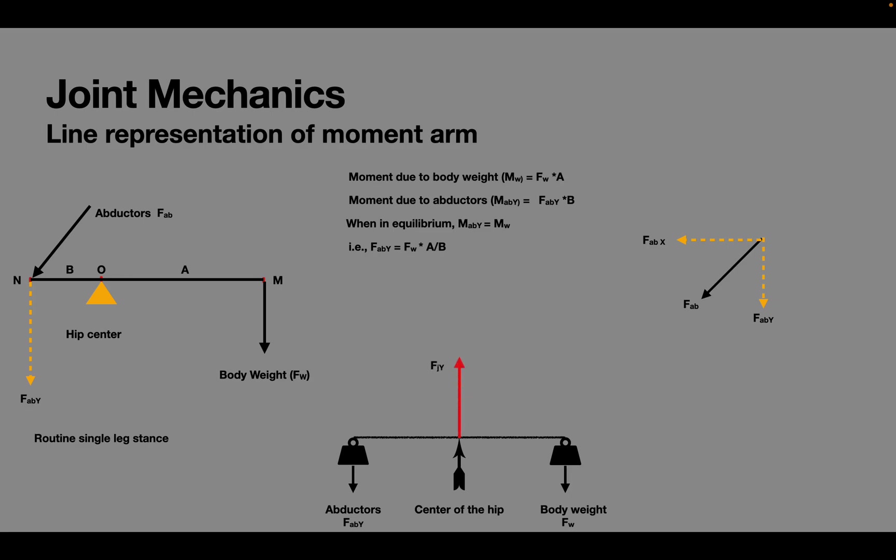And once again as we have seen previously due to the anatomical construct of the hip the actual joint reaction force FR is set at an angle of 30 degrees. Therefore FR is Fjr by cos theta.